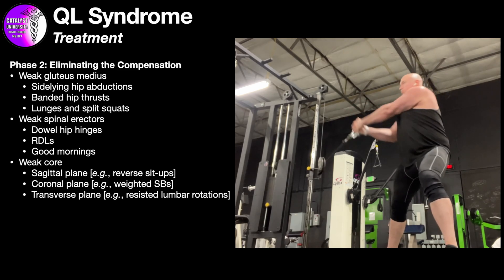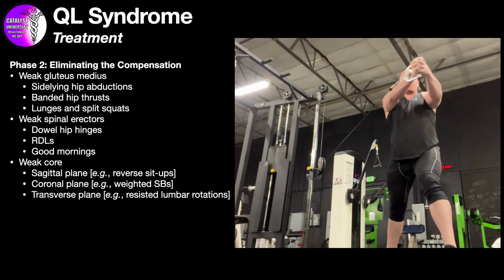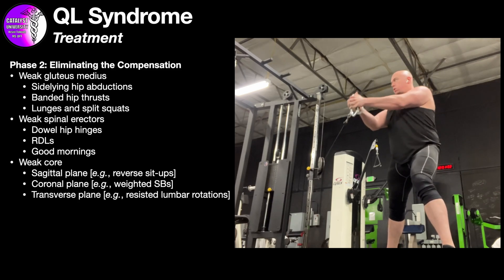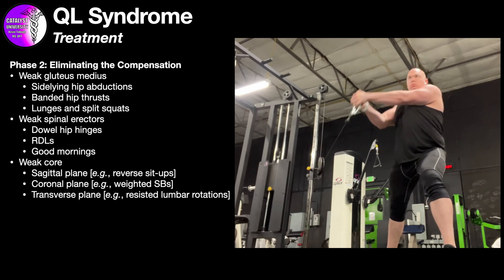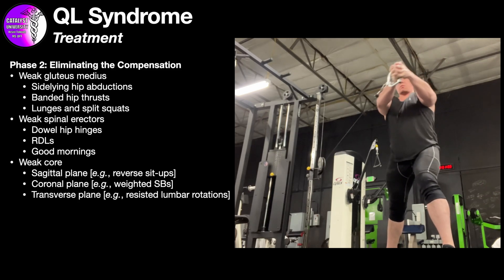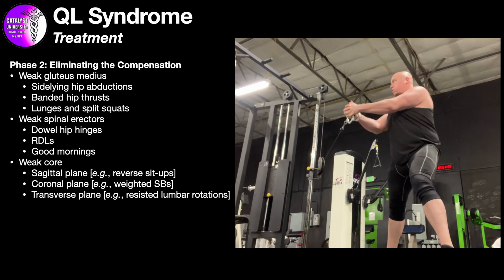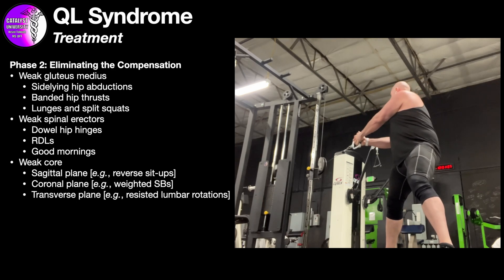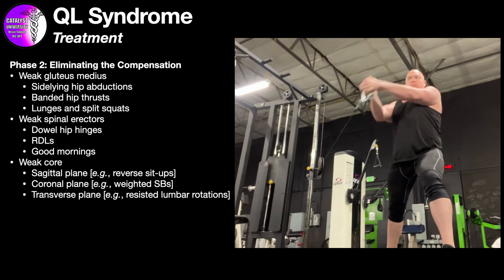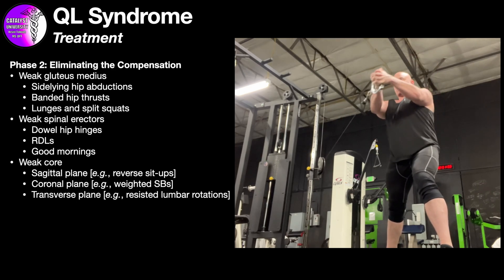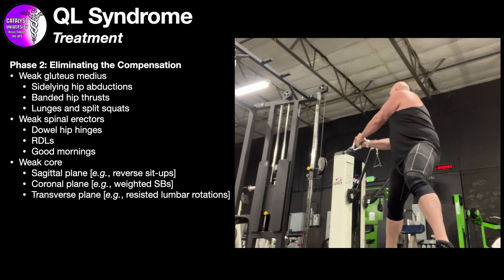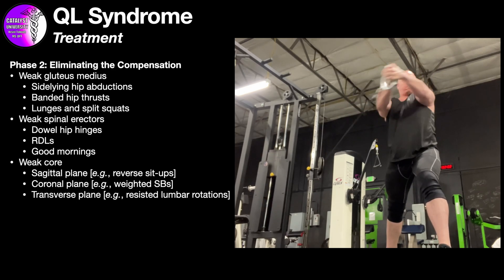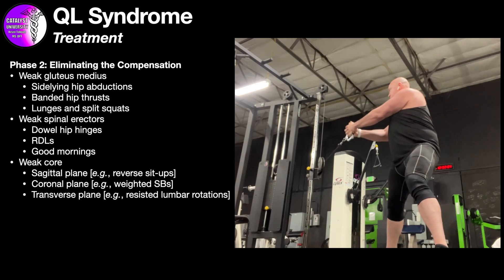For the transverse plane, maybe start with some Pallof press. Sometimes strengthening in the coronal plane is a little too much for people at first because that's one of the actions of the QL, but we can get the obliques stronger without doing side bending — we can do rotation. Resisting rotation with a Pallof press or resisted lumbar rotations, whether with a band or cable machine.